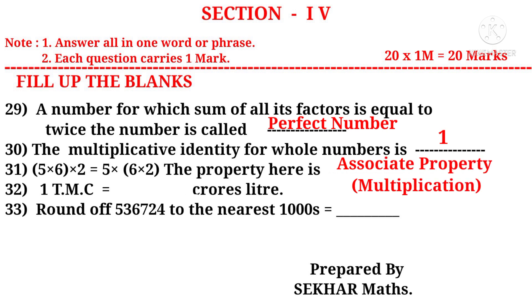32: 1 TMC is equal to dash crores litres. 1 TMC is 28,316 crores litres.